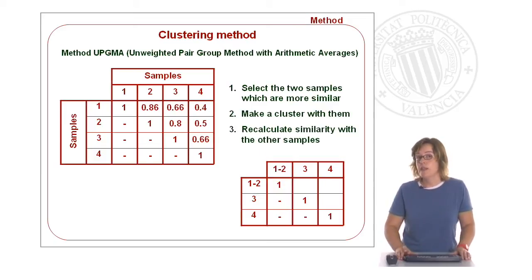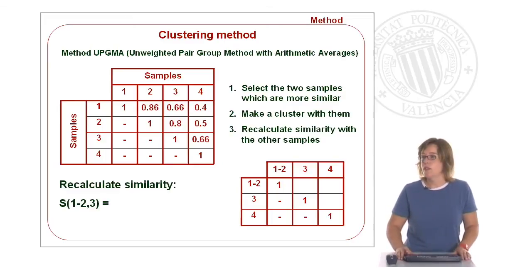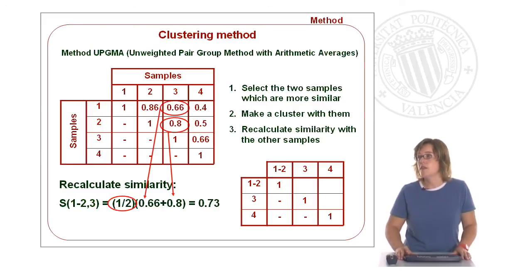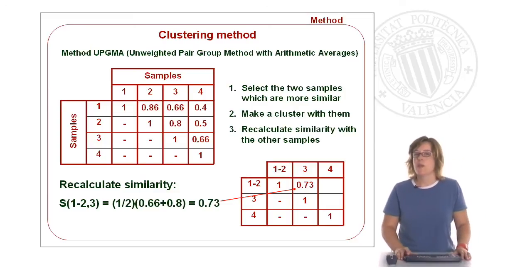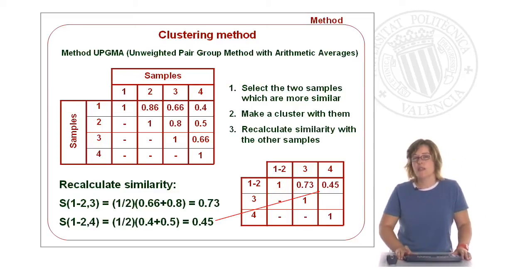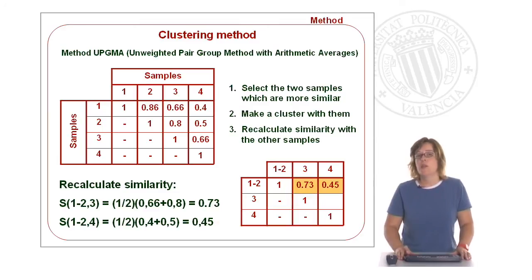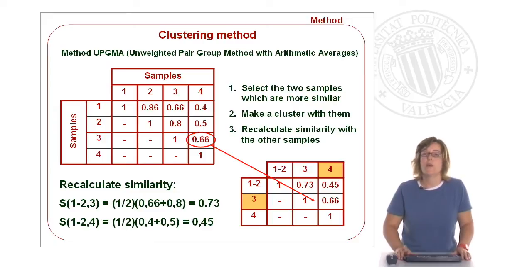We then have to recalculate the similarity with the rest of the samples. The similarity between group 1–2 and sample three is the average of the similarity between sample one and three, and sample two and three. We apply the same expression to get the similarity between group 1–2 and sample four. For those samples not included in any group, the similarity remains the same — so for samples three and four, the similarity is the original value.